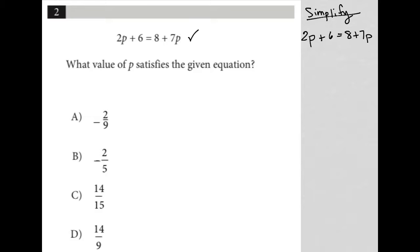I like to have my variables on the left-hand side, so I'm going to subtract 7p from both sides and subtract 6 from both sides so that the p variable is gone from the right side and the numbers are gone on the left side.